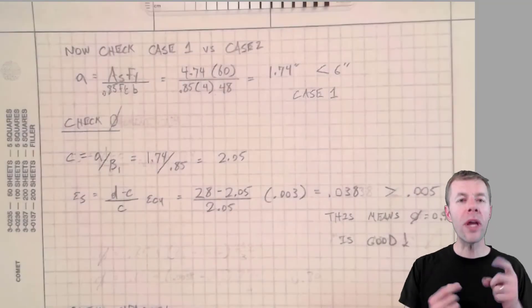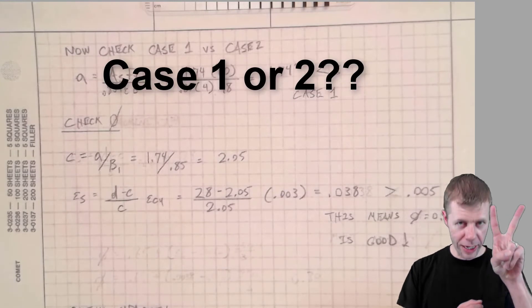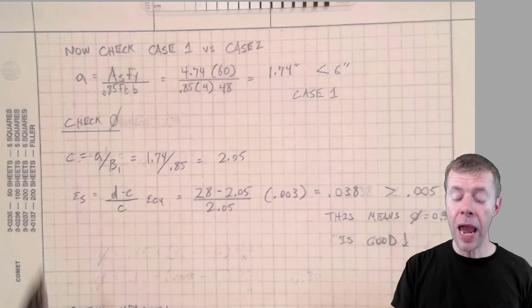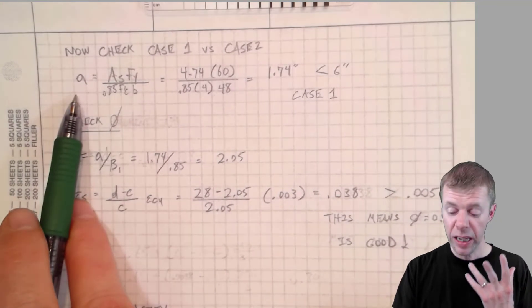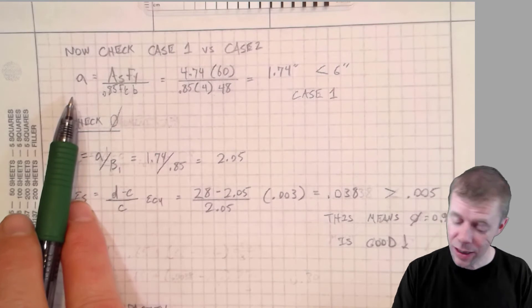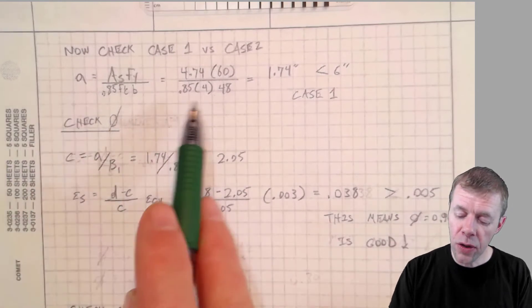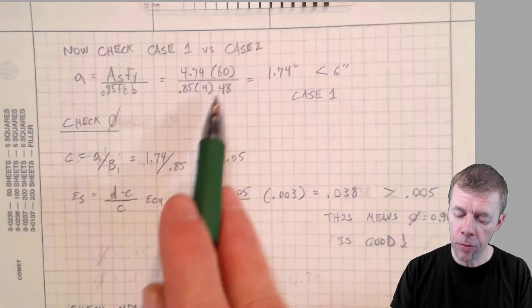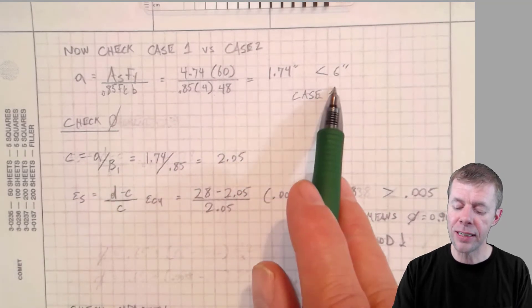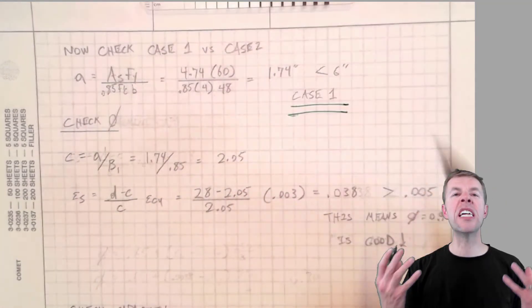Now we're gonna check are we in case 1 or are we in case 2. To do that we check with this A. This A may or may not be true. It's a mythical A. It's assuming we're in case 1. So we're gonna calculate this A. 4.74 boom boom boom. And we get 1.74 inches. It's less than 6 inches. Yes we're in case 1.